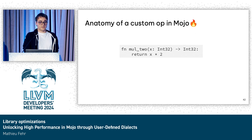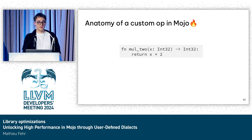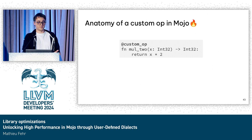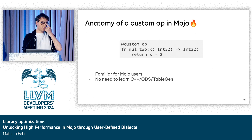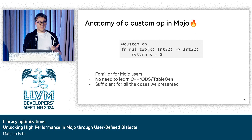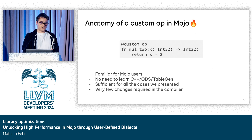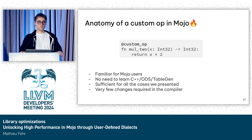So how does it actually look? If we want to add a new operation in Mojo for something that just multiplies an integer by two, what you would have before is just a function in a library, and what we now have is a kind of MLIR-style operation. The solution is just adding a decorator — and this is all you need for defining a new operation. It's better than doing this in ODS, because it's familiar for Mojo users: you just add a decorator, there's no need to learn a new language like C++, ODS, or TableGen for new dialects. And it's sufficient for all the cases presented, with only a few changes required in the compiler, because you're still operating on functions and we don't have to add a new set of optimizations or handle custom operations everywhere in the pipeline.